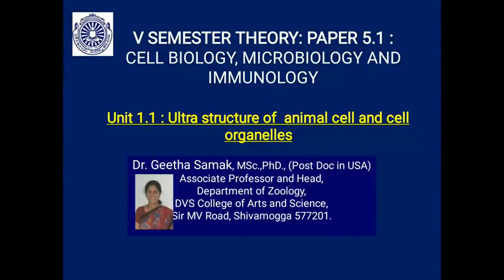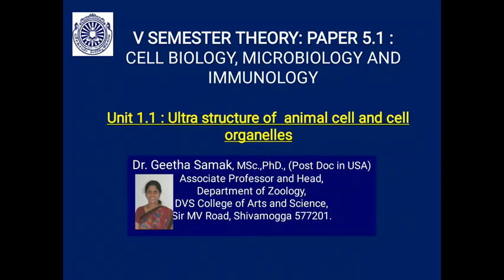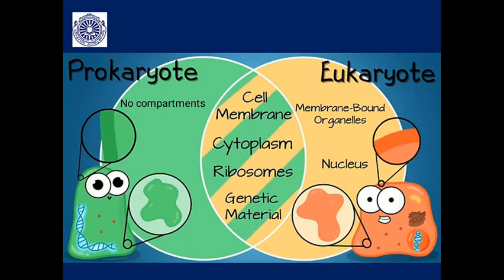Welcome to fifth semester theory paper 5.1, Cell Biology, Microbiology and Immunology, Unit 1.1: Ultrastructure of Animal Cell and Cell Organelles. All living organisms are composite of cells. The cell is the basic structural and functional unit of life. All living organisms can be divided into prokaryotes and eukaryotes.